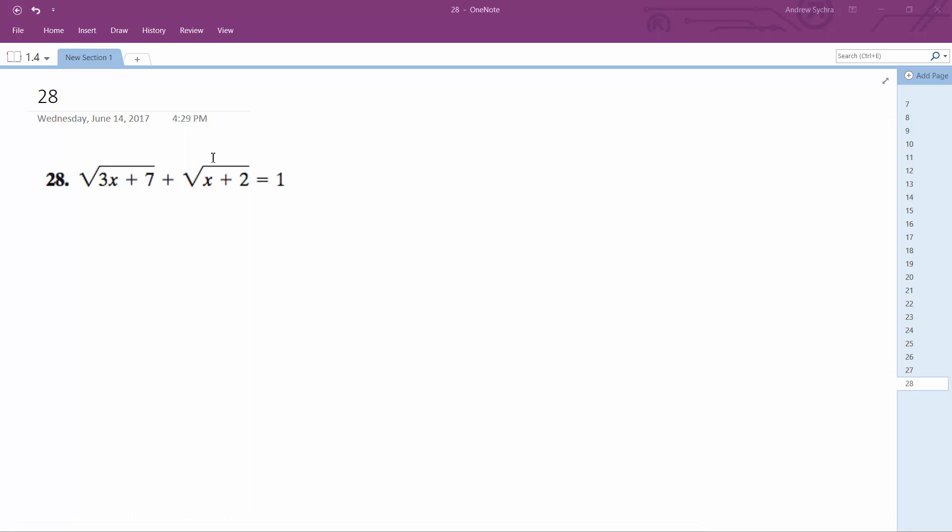All right, we're going to solve this problem. First thing I'm going to do is move one of these radical terms to the right, so I'm going to have 3x plus 7 is equal to 1 minus the square root of x plus 2.